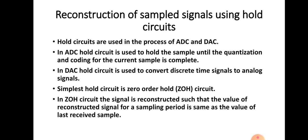Similarly, in the case of digital to analog conversion process, various types of hold circuits are used to convert the discrete time signals into analog signals. There are different types of hold circuits, and the simplest hold circuit is the zero-order hold, or ZOH, that is zero-order hold circuit.